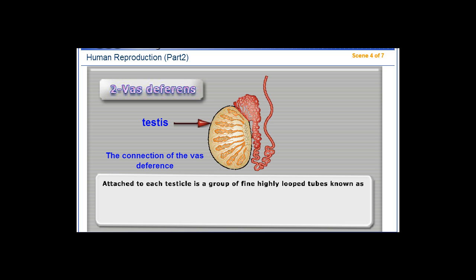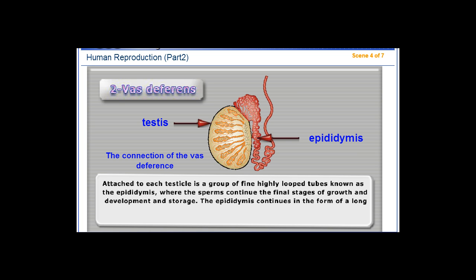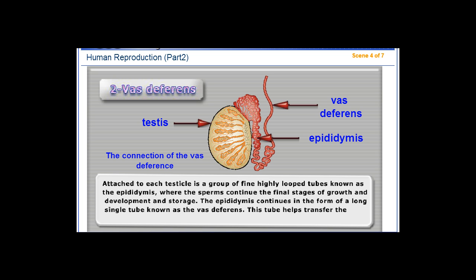Attached to each testicle is a group of fine, highly looped tubes known as the epididymis, where the sperms continue the final stages of growth, development, and storage. The epididymis continues in the form of a long single tube known as the vas deferens, which helps transfer the sperm from the testis to the urethra.